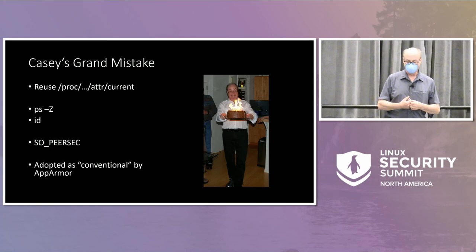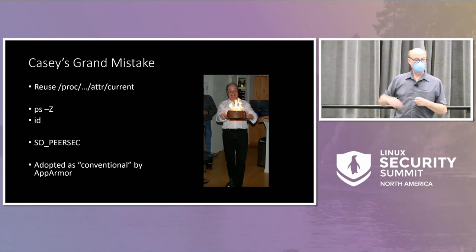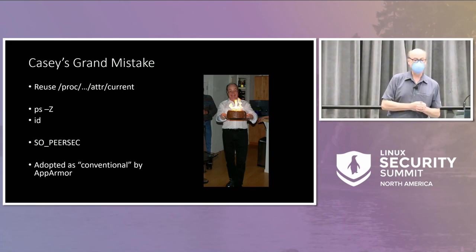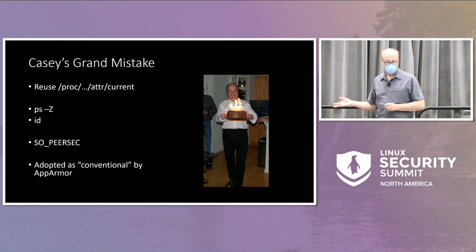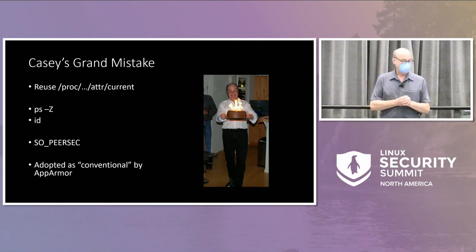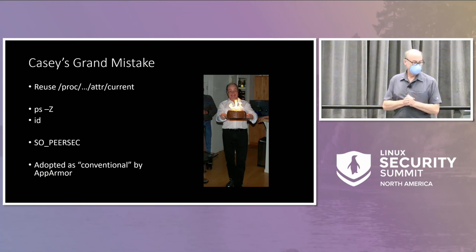Unfortunately, a lot of applications then say, now I'm going to go into a function in libselinux and it's going to tell me what to do with this — and that doesn't really work very well if it's a SMAC label. The same thing works with SO_PEERSEC, which is the mechanism to get the peer credentials from the socket. If you just pass the context without information about what LSM it is, it's generally going to assume it's SELinux because that's the way a lot of applications have been written. Unfortunately, as I made this mistake, it was adopted as conventional. AppArmor did the same thing, adopting 'current' as the current context.